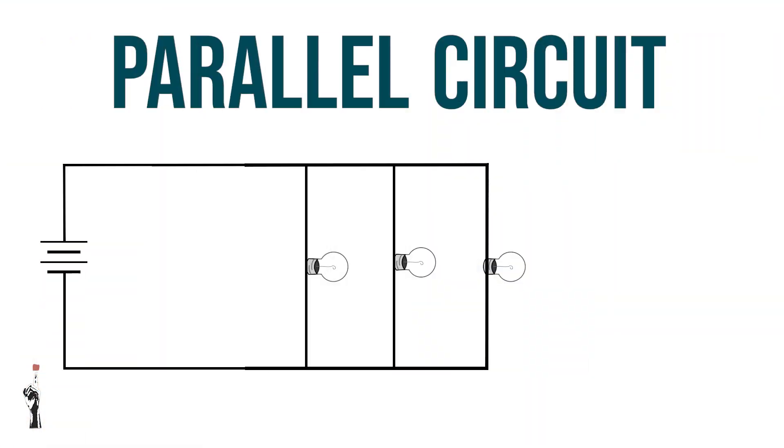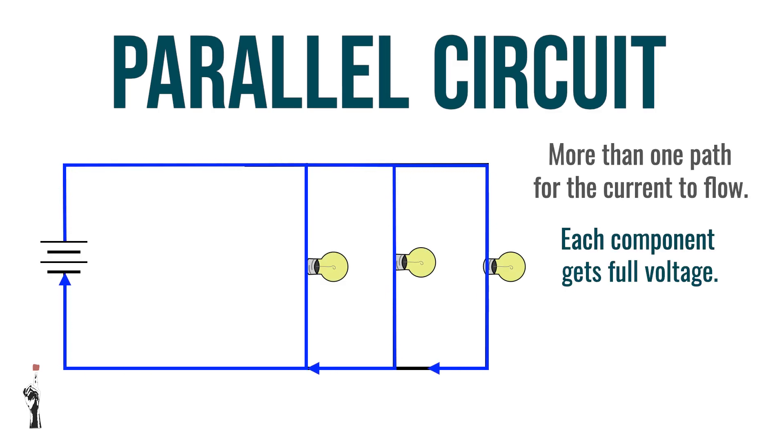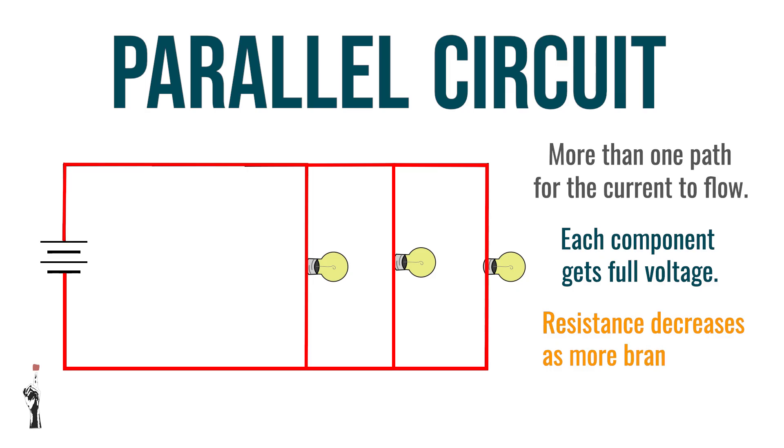A parallel circuit has more than one path for the current to flow. And each component gets full voltage. If one bulb breaks, the others will stay on in one circuit. The current splits between the branches and the total resistance decreases as more branches are added to the circuit.